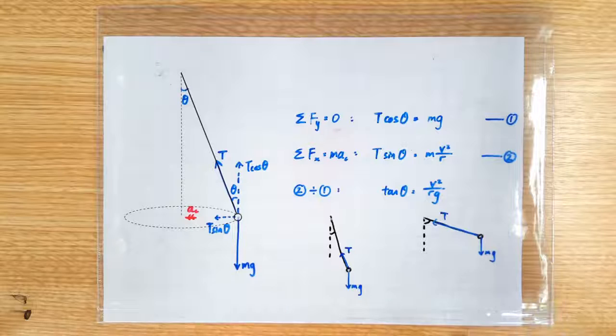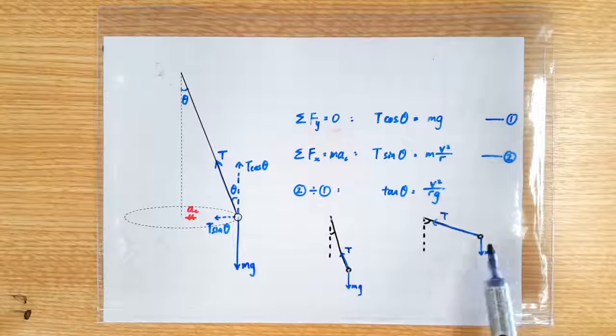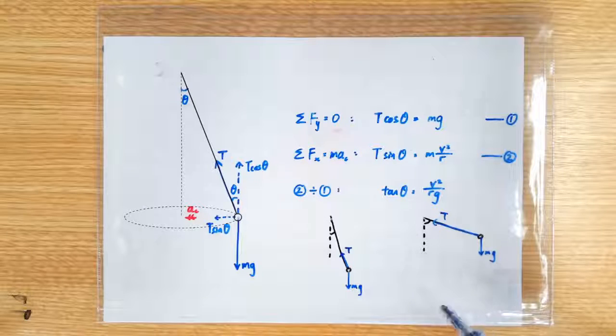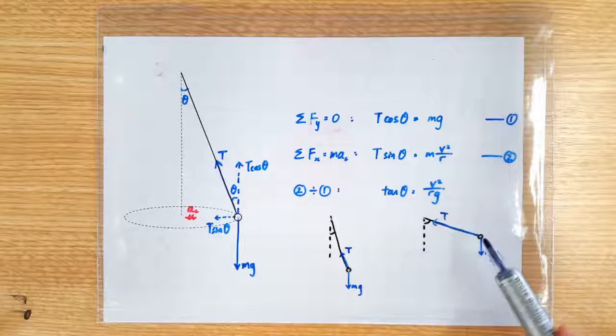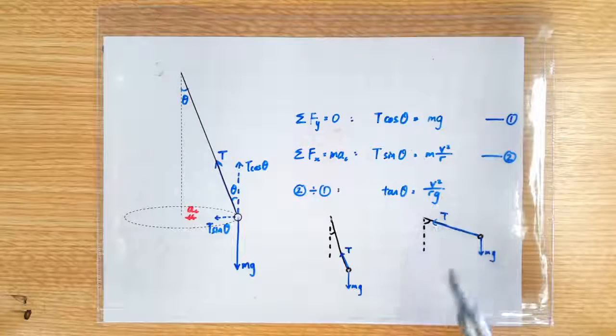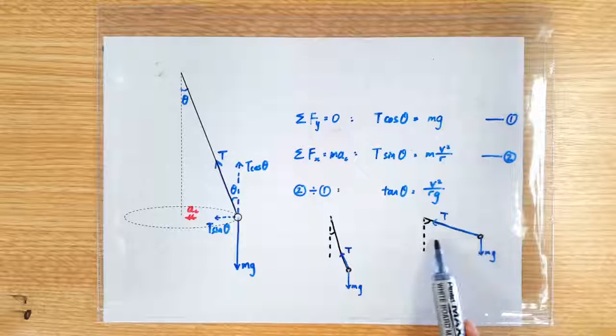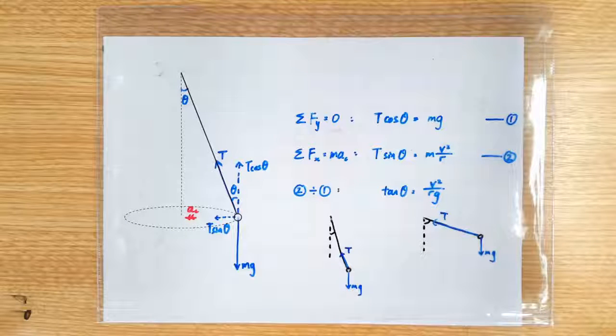And this kind of makes sense because a faster circular motion will require a larger centripetal force, and this can come about only if the string pulls harder, and if the angle θ is larger, then we have a stronger horizontal component that provides the required centripetal force.